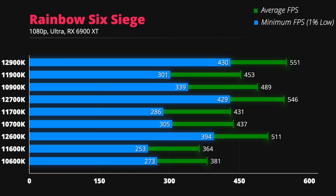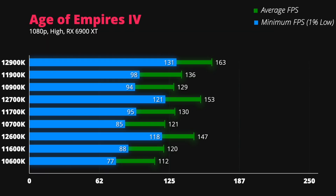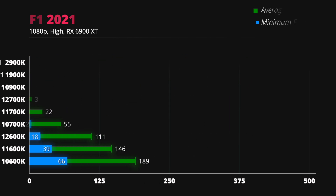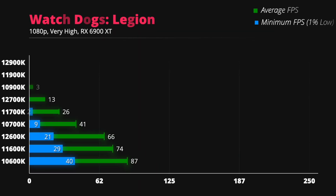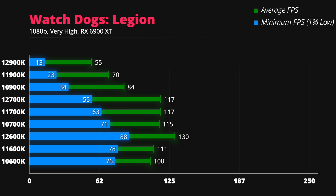In some other games that are not GPU-bottlenecked, it is very impressive to see that the minimum FPS of 12th gen processors is equal to the average FPS that 11th and 10th gen can produce. High refresh rate monitor owners will be particularly pleased.